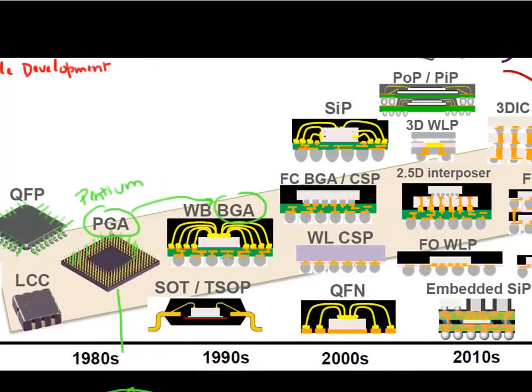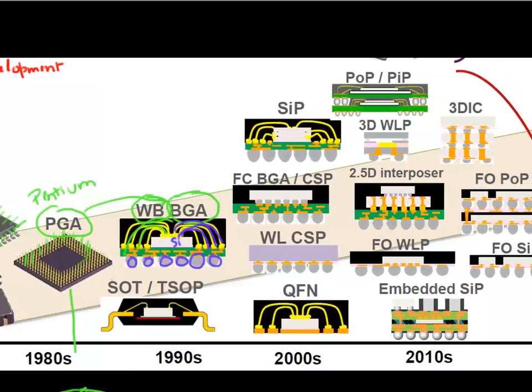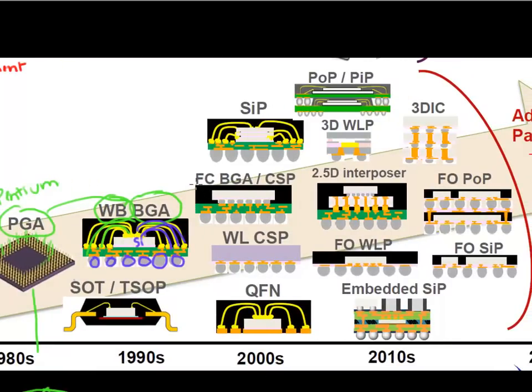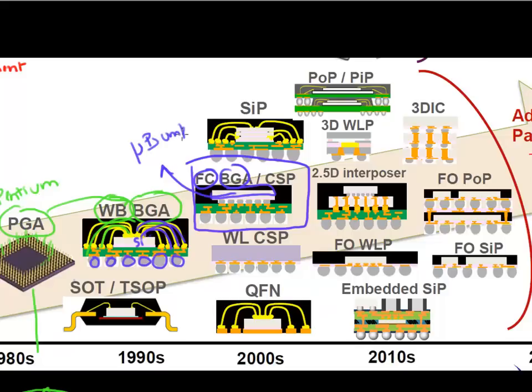And then more recently, the industry moved to this ball grid array packages. The first generation of which was using these wire bonds. So these wire bond ball grid array packages where you would have these wire bonds connecting your silicon to your package, and you will have these array of solder balls which would then connect this package to the outside world. And so this was the late to mid 90s. And then as we talked about more recently, what people are using most commonly is this flip chip ball grid array package, where you would flip your chip around. And now you have these micro bump technology which is connecting directly your silicon to this package, which is now then connected to the outside world using this ball grid array.